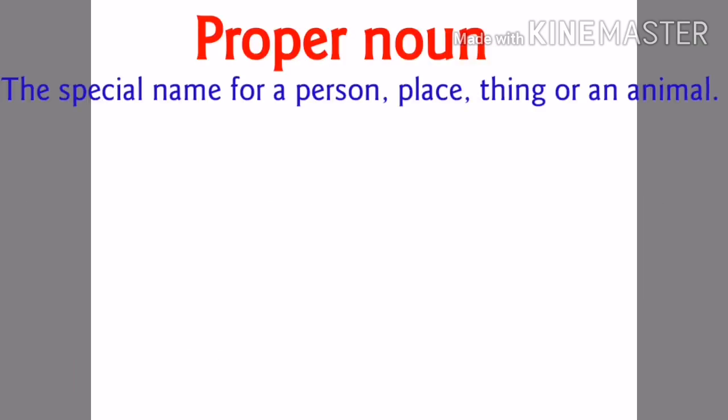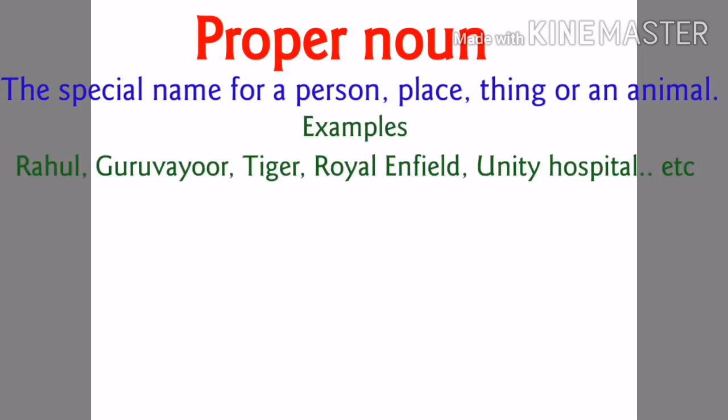Now let's see what is proper noun. Proper noun is a special name for a person, place, thing or an animal. Here we are giving a specific name to a person, place, thing or animal. Proper noun always starts with a capital letter. For example: Rahul, Guruvayur, Tiger, Royal Enfield, Unity Hospital, etc. These are names and they start with a capital letter.